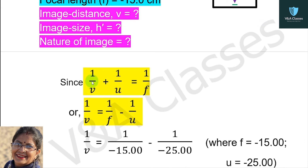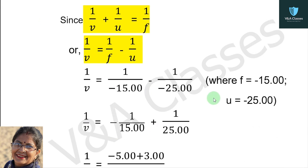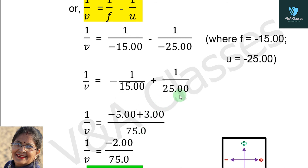So according to the mirror formula, 1 by v plus 1 by u equals to 1 by f. We rearrange to find image distance: 1 by v equals to 1 by f minus 1 by u. Both f and u have minus signs here, giving us two minus signs, so we merge them and add a plus.